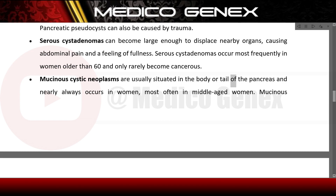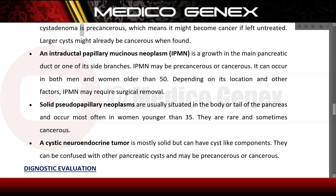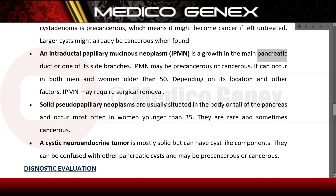Mucinous cystic neoplasms are usually situated in the body or tail of the pancreas and nearly always occur in women, most often middle-aged women. Mucinous cystadenomas are precancerous, meaning they might become cancer if left untreated — larger cysts might already be cancerous when found. Intraductal papillary mucinous neoplasms (IPMN) are growths in the main pancreatic duct or side branches, which may be precancerous or cancerous, occurring in both men and women older than 50.